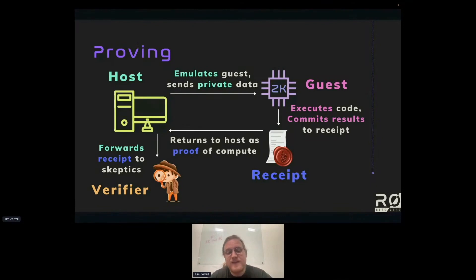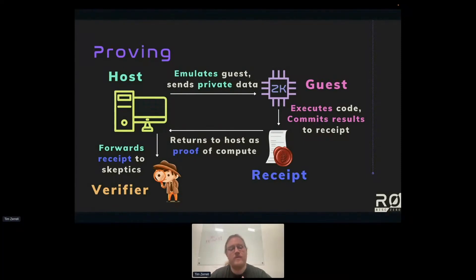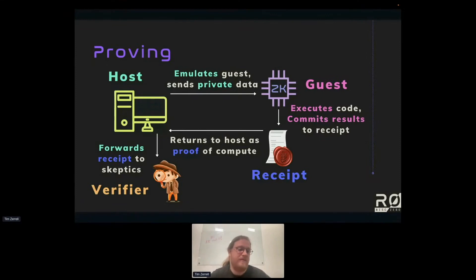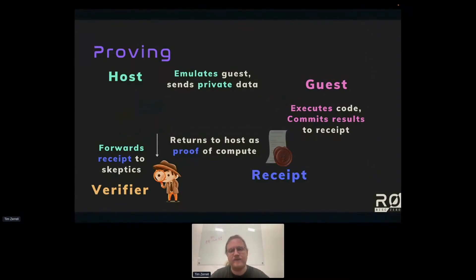The host is then able to send that receipt off to verifiers — it can forward the receipt to skeptics, whoever the host thinks should know what was computed and needs to be convinced it was computed faithfully. And so that goes off to the verifier.